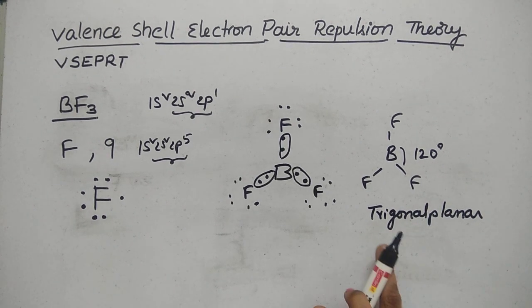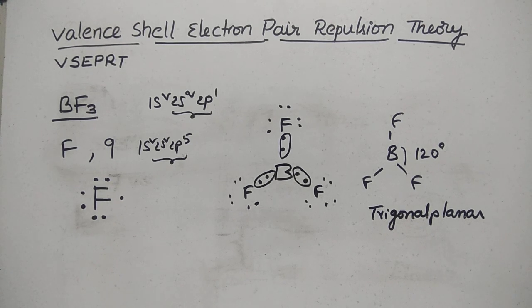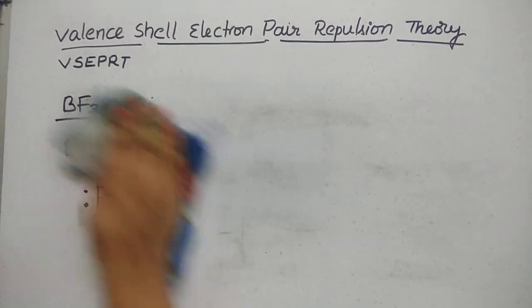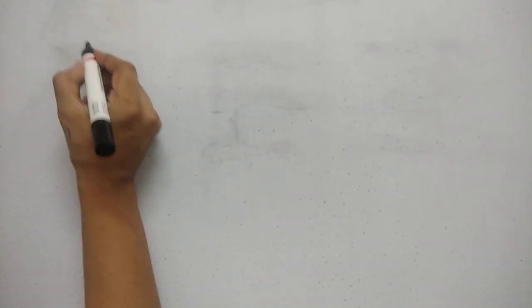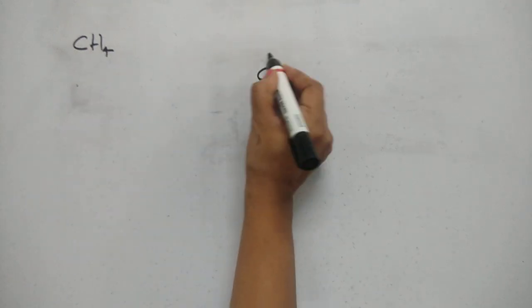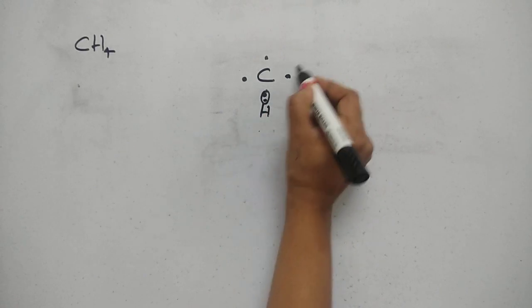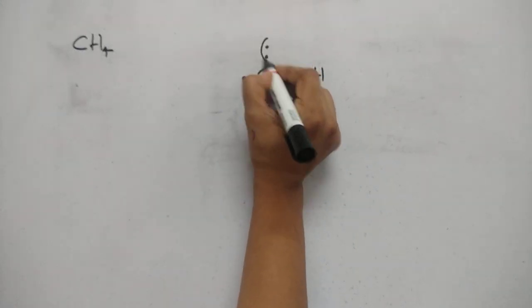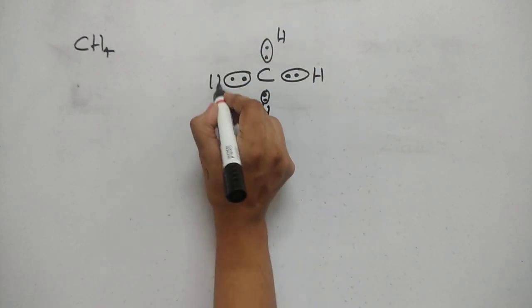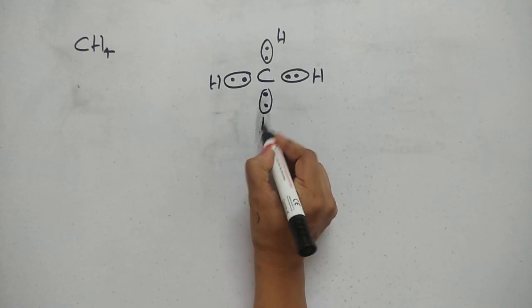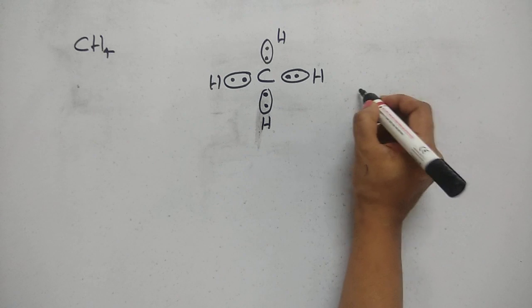Next, if there are 4 bond pairs, the best example is methane, CH4. Carbon forms 4 bonds with 4 hydrogen atoms. With 4 bond pairs and no lone pairs, the bond angle is 109.28 degrees and the shape is tetrahedral.